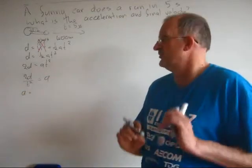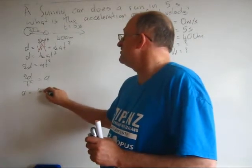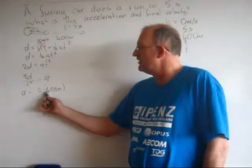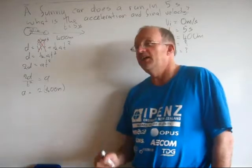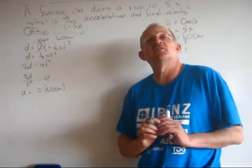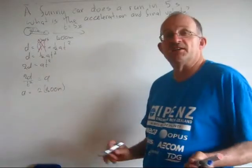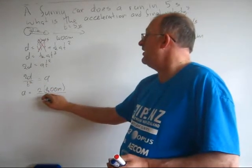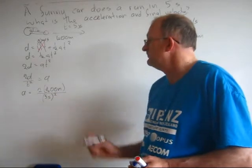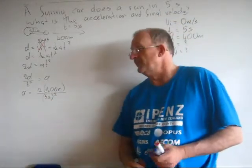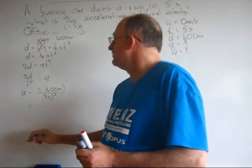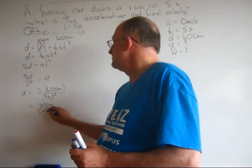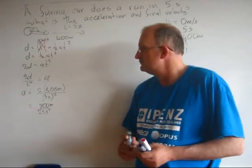Now I stick in numbers. The acceleration is twice the distance. The distance we said is 400 meters. Notice I stick in the number with unit. And notice I stick it in brackets. The brackets are just there to make everything tidy. It's a style thing. You won't get marked down if you don't do it, but it makes it a lot easier if you do. The time is 5 seconds. And that's squared. Once I square the bracket, that means I square the units as well.